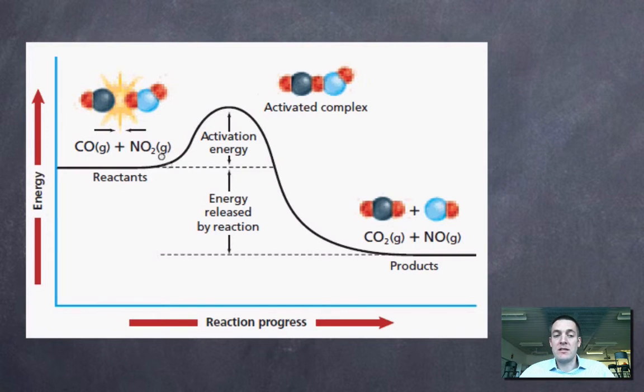Another way of putting this is to say that the reactants will only form products if they've got enough energy in that collision to reach what is called the activated complex. Now, the activated complex is kind of what exists at the top of this hill.